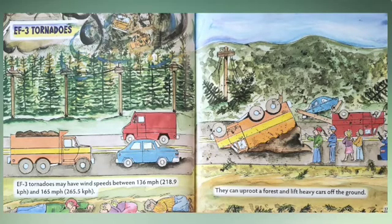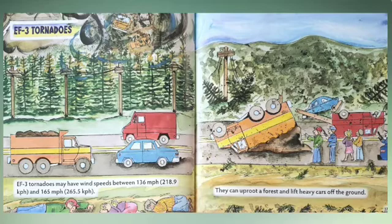EF3 tornadoes may have wind speeds between 136 mph and 165 mph. They can uproot a forest and lift heavy cars off the ground.